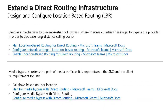Beyond basic direct routing connectivity, calling, and validation, there are options to extend the direct routing relationship. The first is location-based routing, a mechanism to prevent and restrict toll bypass. This comes up in countries where it's illegal to bypass the telco provider — India is a great example. You need to understand what it is, plan for it, and define the different network elements — sites and networks — so that when users are at a site, the call takes the nearest path out to avoid bypassing long distance or similar restrictions. Review all components from planning and configuring through enabling for users.